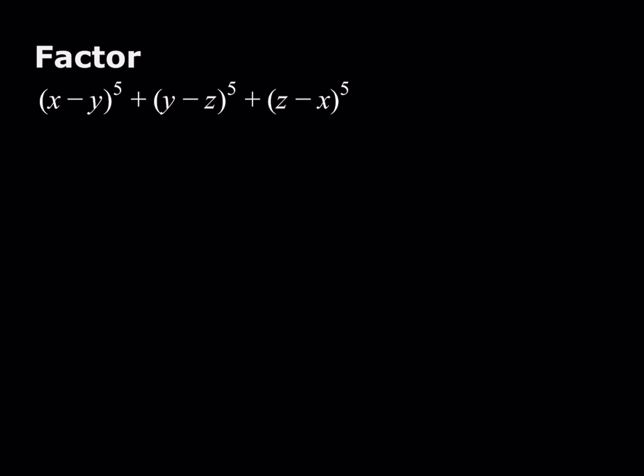So we have (x minus y) to the fifth power plus (y minus z) to the fifth power plus (z minus x) to the fifth power, and we're supposed to factor this.